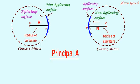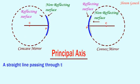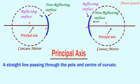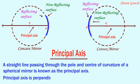Principal axis. A straight line passing through the pole and center of curvature of a spherical mirror is known as the principal axis. Principal axis is perpendicular to the mirror at the pole.